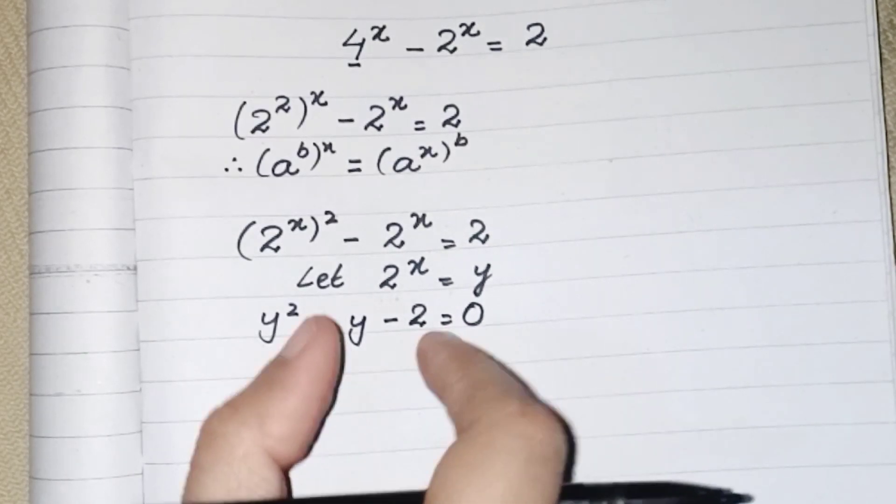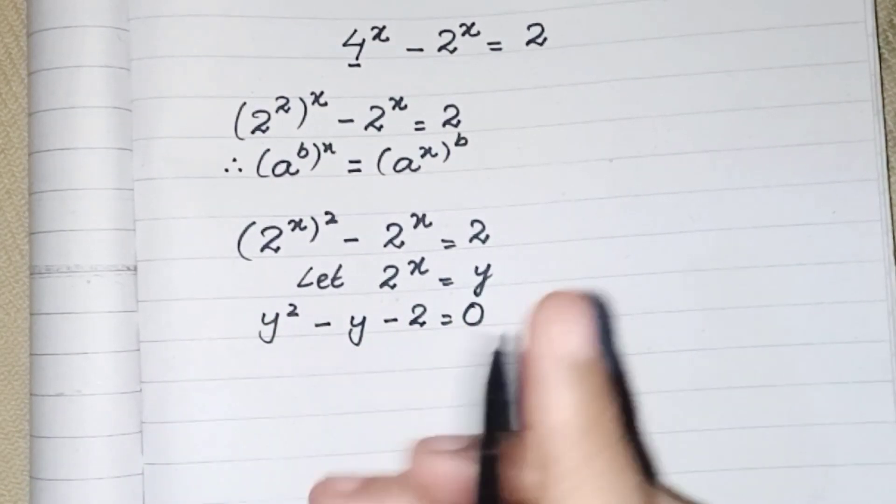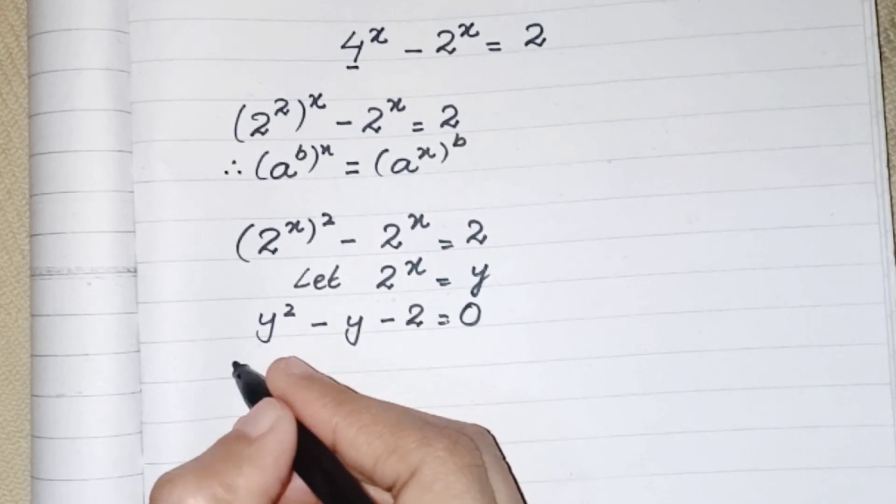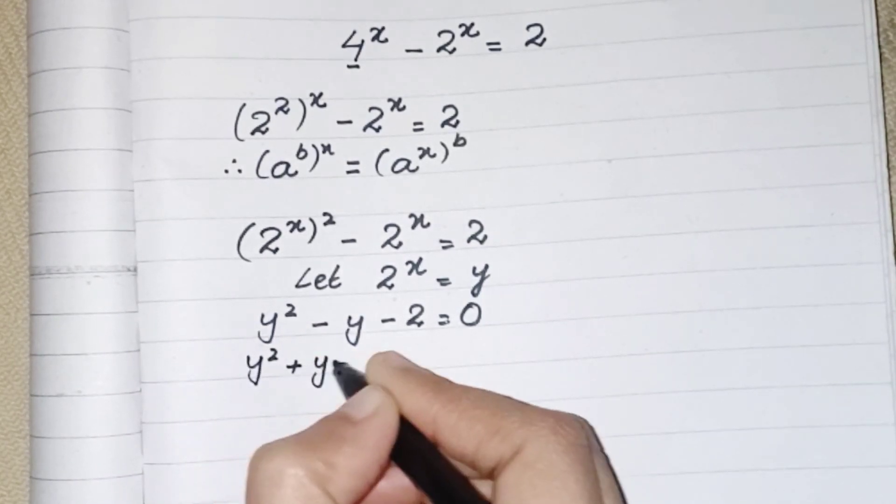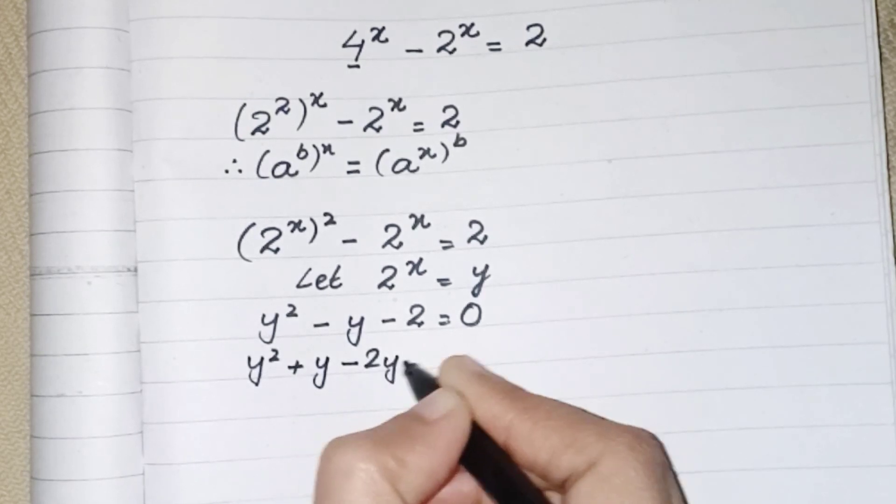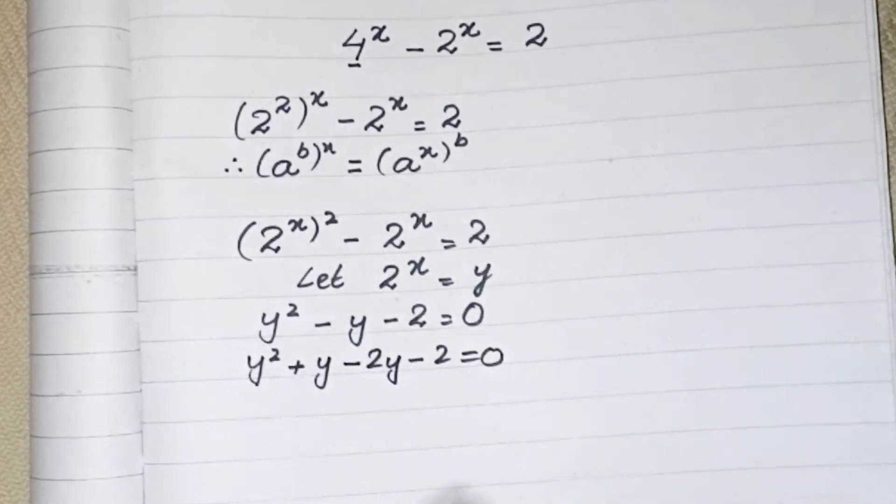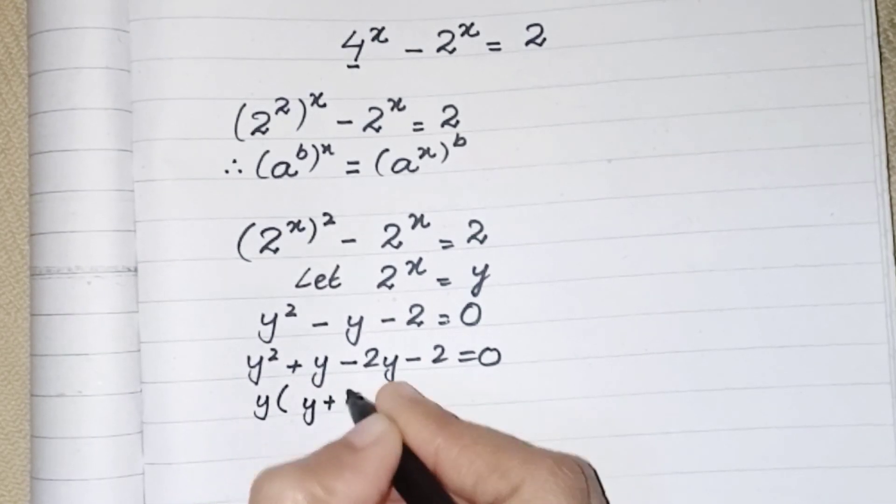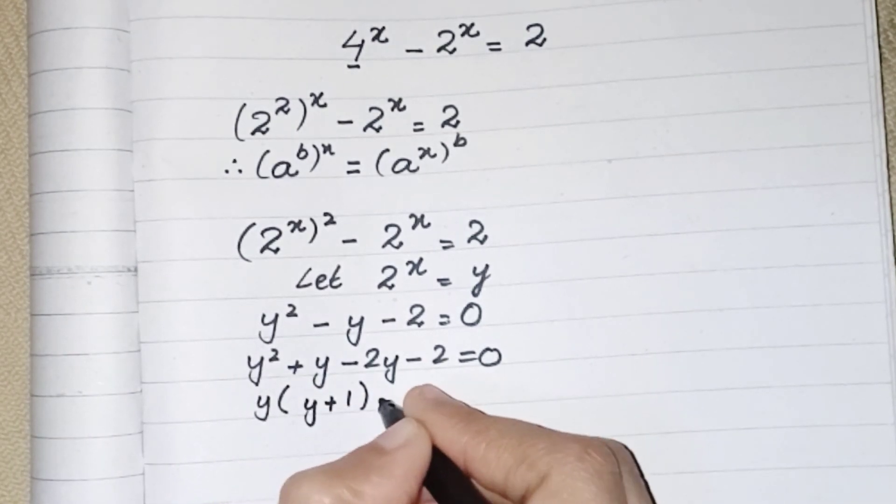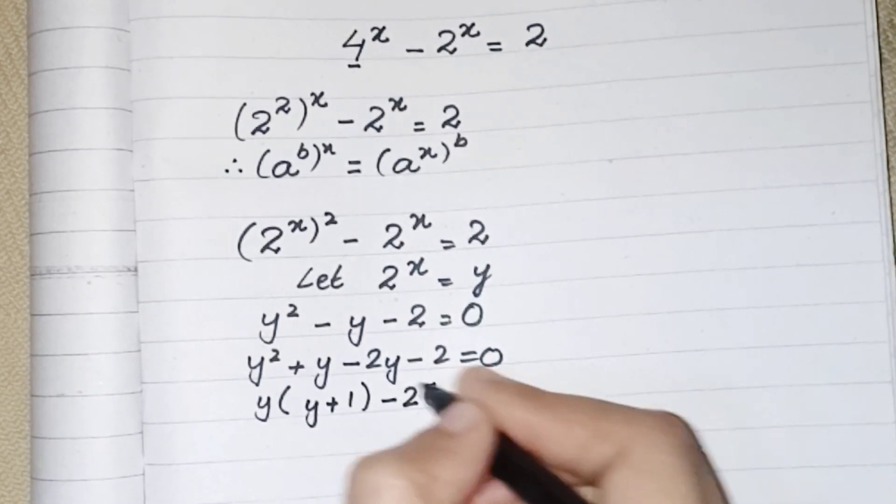Now this is a quadratic equation. To get the value of y, we have to convert it into factors. So the factors will be y^2 + y - 2y - 2 = 0. Taking common from first two will be y, the remaining one y + 1. Common from last two is minus 2, and the remaining one will be y + 1.